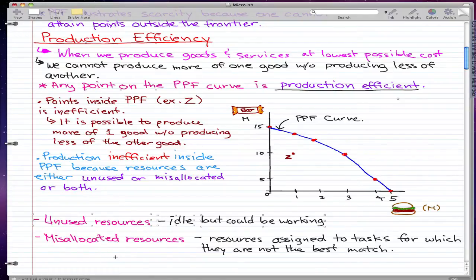So an example of this would be a policeman trying to put out a fire, which is meant for a fireman's job. The policeman is meant to catch criminals, so they're not really the best resource to assign to putting out a fire. That's a misallocated resource.